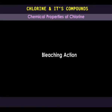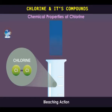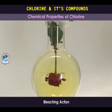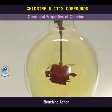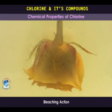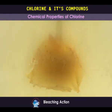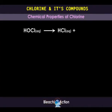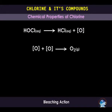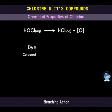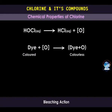Bleaching action of chlorine. Chlorine is a strong bleaching agent. When wet blue litmus paper is inserted in a glass jar of chlorine, it turns red and then white, indicating that it was bleached. Equally, when flower petals are inserted in a flask containing chlorine, they are bleached after some time. The bleaching action is a result of hypochlorous acid, which is formed when chlorine reacts with water. Hypochlorous acid is unstable and decomposes to hydrochloric acid and an oxygen atom. Free oxygen atoms are highly reactive and combine in pairs to form oxygen molecules. In the presence of a dye, the oxygen atom reacts with it to form an oxidized compound, which is colorless.